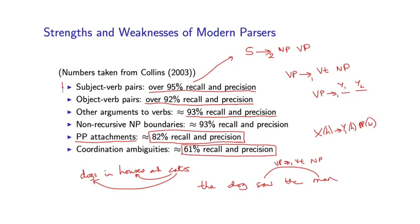So the take home from this is, I think, that the core structure of these parsers is quite good. Basic relations like subject verb, object verb, other arguments to verbs are recovered with high accuracy. It's when we have modifiers by prepositional phrase attachments, coordination ambiguities, and so on. Those are the cases which are causing difficulty.